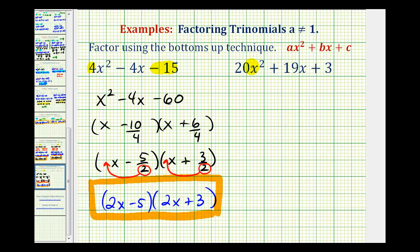We're going to create a trinomial where a is equal to one by replacing c with a times c. So we'll have x squared plus nineteen x, and then twenty times three would be sixty.